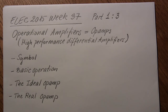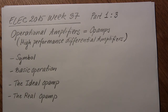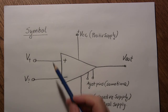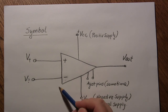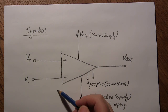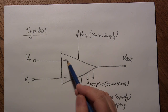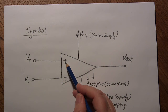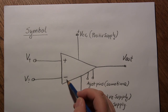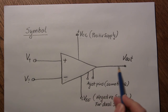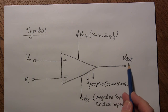Let's look at the symbol. We draw the op-amp here just as a triangle. It has two important input pins: the non-inverting input and the inverting input pin. And then it has the output pin, Vout.